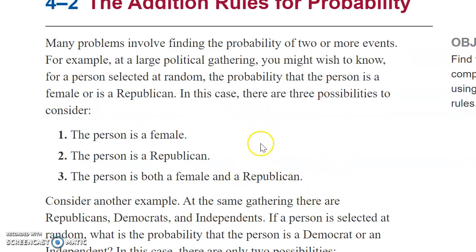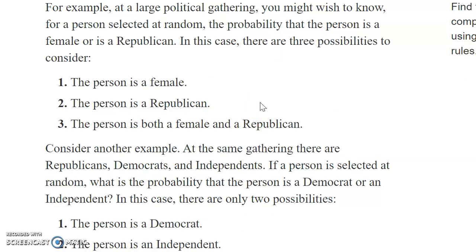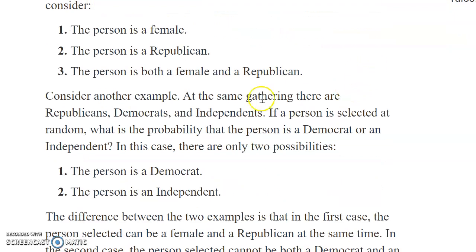In this case, there are three possibilities to consider. The person could be a female, the person could be a Republican, or the person could be both a female and a Republican. You have a success if the person is a female — even if they're a Democrat or Peace and Freedom Party — because the requirement is female or Republican. Another success is picking a man who is a Republican. The third way of getting a success is picking someone who is both female and a Republican.